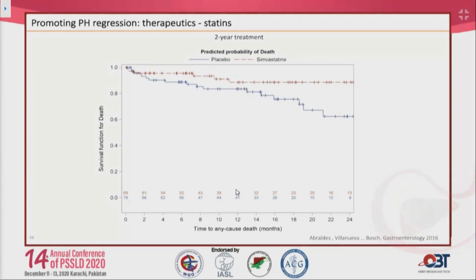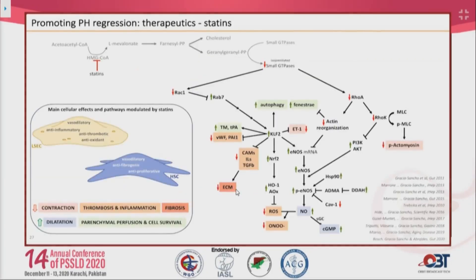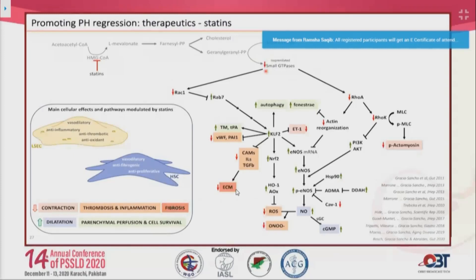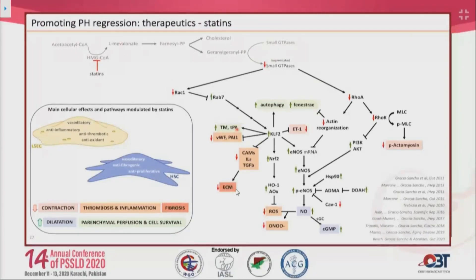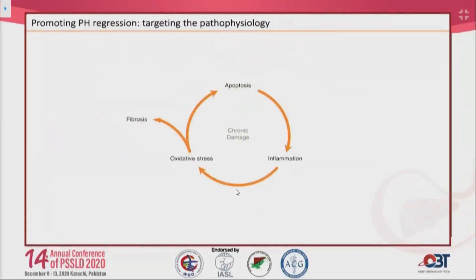Statins, beyond inhibiting intracellular cholesterol synthesis, also inhibit small GTPases — specifically Rac1 and RhoA — improving molecular pathways downstream. This leads to improvement in liver sinusoidal endothelial cells, which become vasodilatory, anti-inflammatory, anti-thrombotic, and antioxidant; and in hepatic stellate cells, which become vasodilatory, anti-fibrogenic, and anti-proliferative.